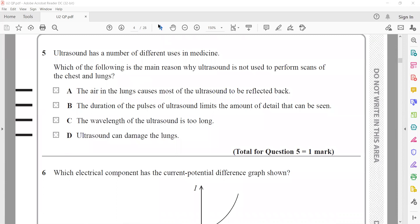Ultrasound has a number of different uses in medicine. Which of the following is the main reason why ultrasound is not used to perform a scan in the chest and lungs? The chest and lungs contain air, and this air will vibrate at higher speed due to the high frequency ultrasound waves and is reflected by air particles. Air in the lungs causes most of the ultrasound to reflect back instead of passing through. It's not about the duration of pulses or wavelength being too long. Ultrasound doesn't damage the lungs. The only thing is the air causes the ultrasound to reflect back.